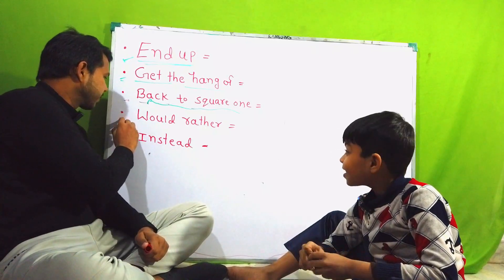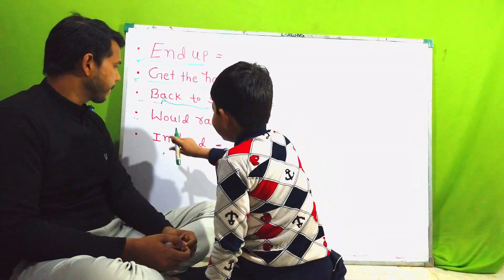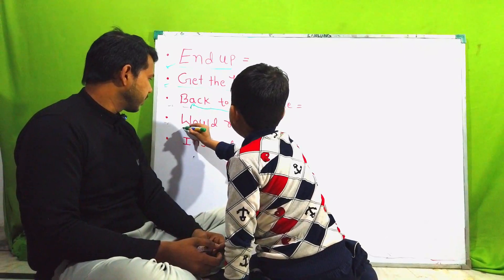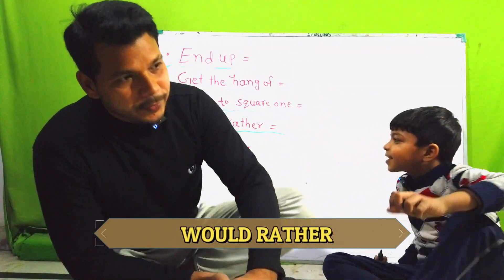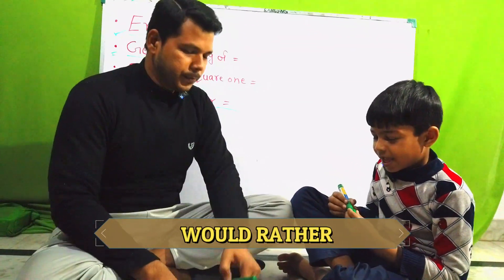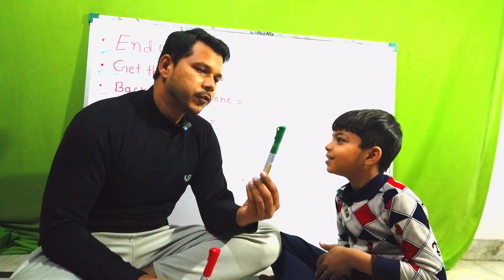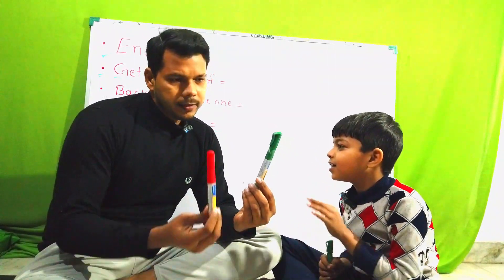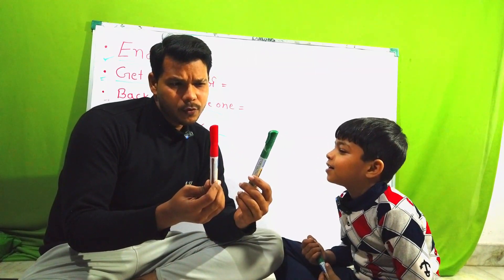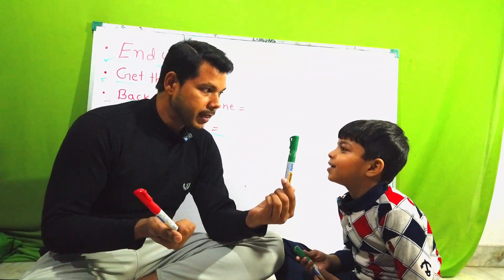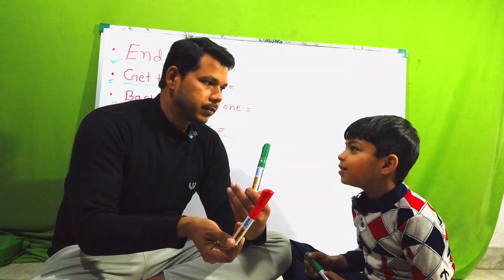Now, 'would rather'. What does 'would rather' mean? Suppose we have two markers — a red marker and a green marker. If somebody asks me which marker I want, I can say: I would rather go for green than red. It means I prefer green. So I can use 'I would rather'.